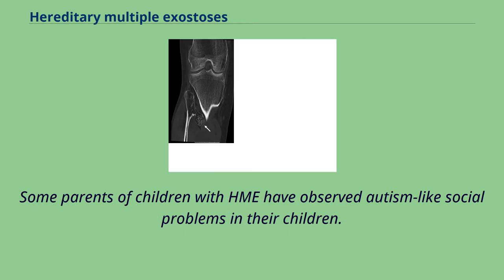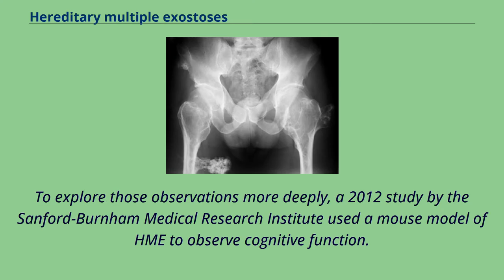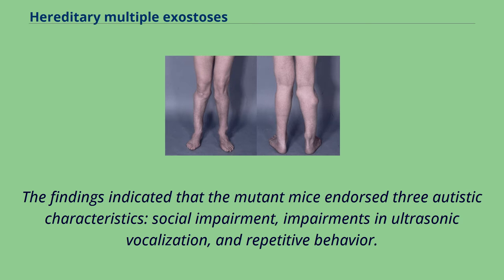Some parents of children with HMO have observed autism-like social problems in their children. To explore those observations more deeply, a 2012 study by the Sanford Burnham Medical Research Institute used a mouse model of HME to observe cognitive function. The findings indicated that the mutant mice endorsed three autistic characteristics: social impairment, impairments in ultrasonic vocalization, and repetitive behavior.